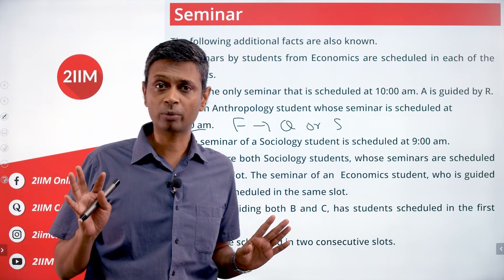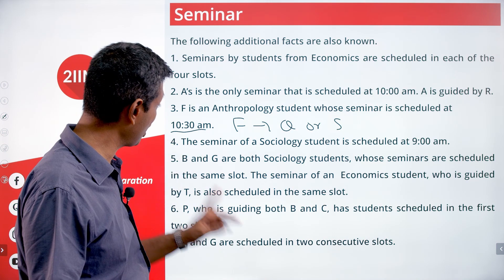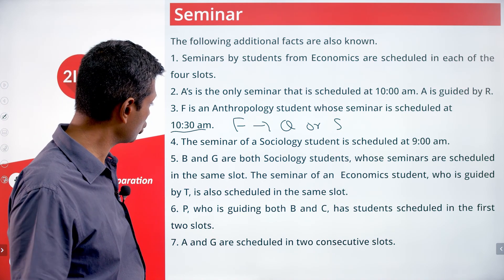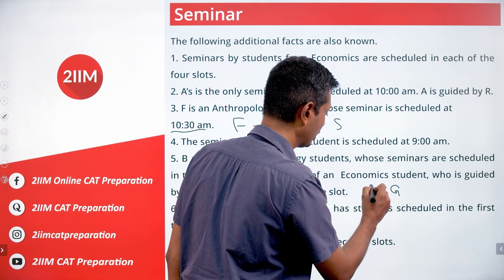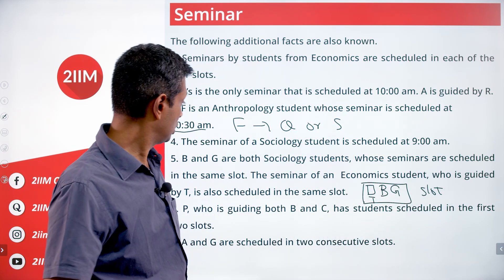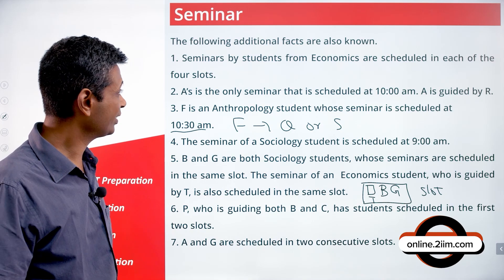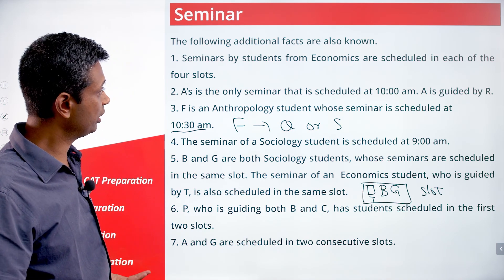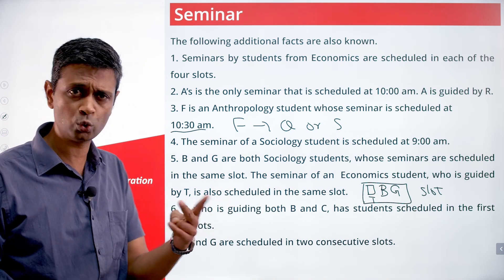The seminar of a sociology student is scheduled at 9am — the first slot is sociology. So the 9am slot has economics and sociology. The 10:30am slot has economics and anthropology. B and G are both sociology students whose seminars are scheduled in the same slot. The seminar of an economics student guided by T is also scheduled in that same slot.